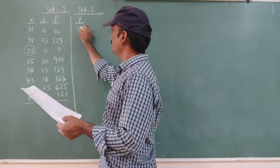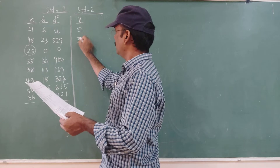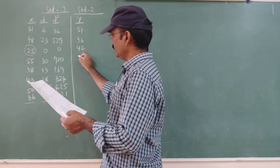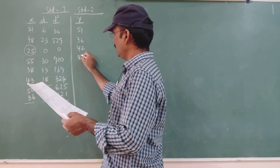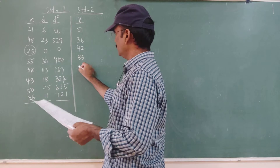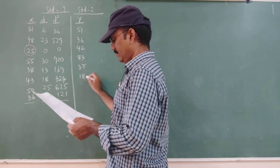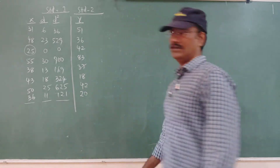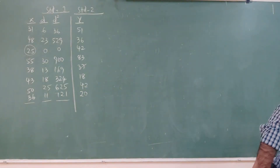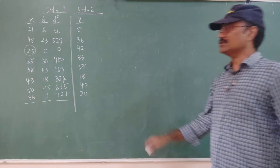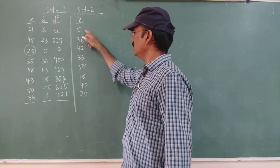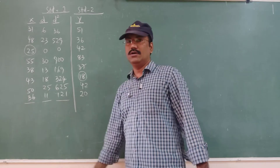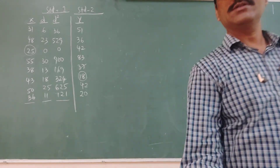The Y values are: 51, 36, 42, 83, 37, 18, 42, and the last is 20. Now check which number is the smallest. I think 18 is the smallest number.